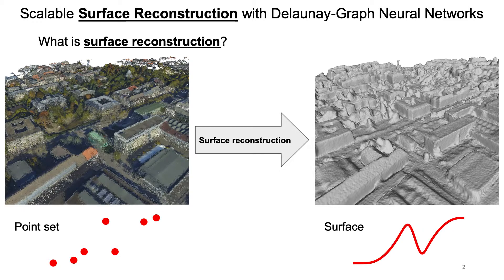Surface reconstruction addresses the problem of transforming a discrete signal such as an image or LiDAR point cloud to a continuous signal which we call a watertight surface. In this presentation I will introduce a novel method for learning-based watertight surface reconstruction which scales to large scenes, thanks to the use of a memory-efficient Delaunay graph neural network.